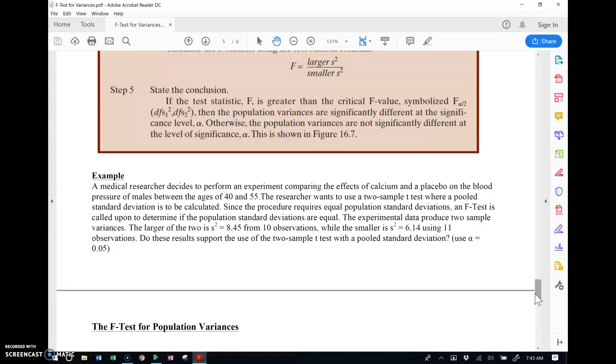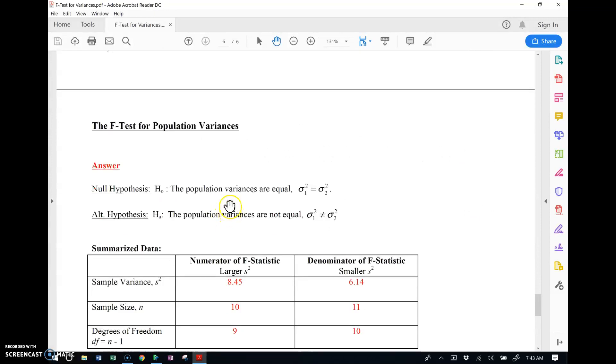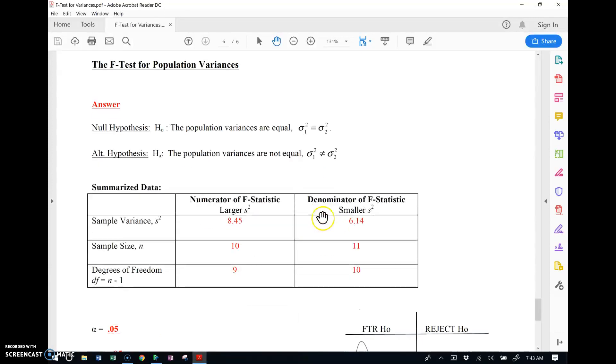Use Welch's t-test when I don't pool or can I assume equal variances. All right so he has his data, two samples, larger sample variance from 10 pieces of the data, smaller sample variance from 11 pieces of data. Do these results support the use of the two-sample t-test with a pooled standard deviation? Use 5% alpha. All right so remember the hypotheses never change. The null is that the variances are equal and the alternative is that the population variances are not equal. All right so here's the summarized statistics given in the question.